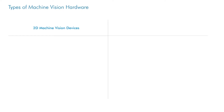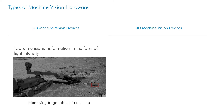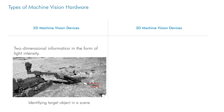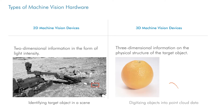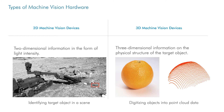Machine vision hardware can broadly be split into two primary categories, 2D and 3D. 2D devices capture two-dimensional information, typically in the form of light intensity, and 3D devices capture 3D information, most often relating to the physical structure of what is being viewed.